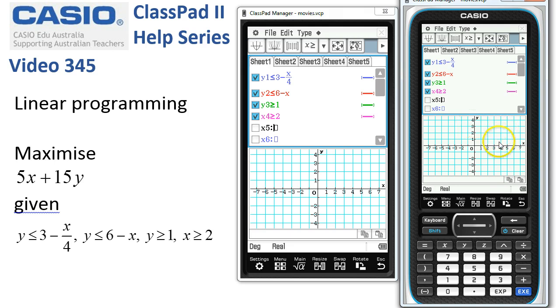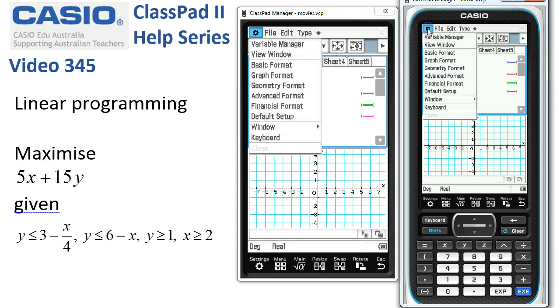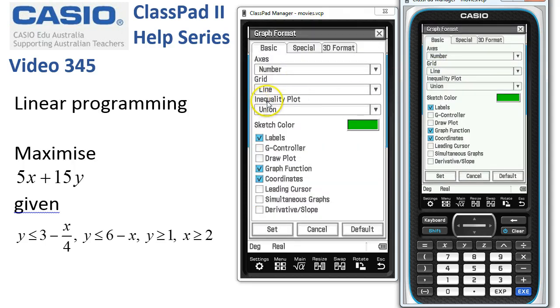Now before we graph our inequalities, we need to check that we're going to get the intersection rather than the union. So if we tap onto graph format here, you'll notice that the inequality plot by default is the union.